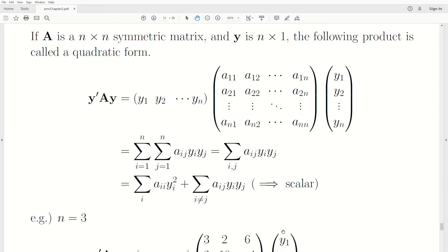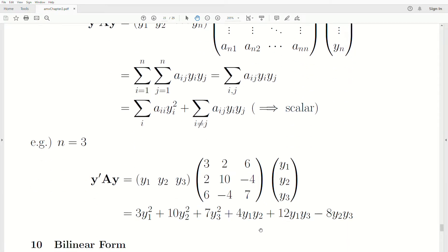And it's a scalar. Now a quick example is this. So Y transpose A Y. When you do this sum, you get this number. A quick way to think about it is when I and J equal, we're going down this diagonal. So the 3 is 3 times Y 1 squared, 10 times Y 2 squared, 7 times Y 3 squared.